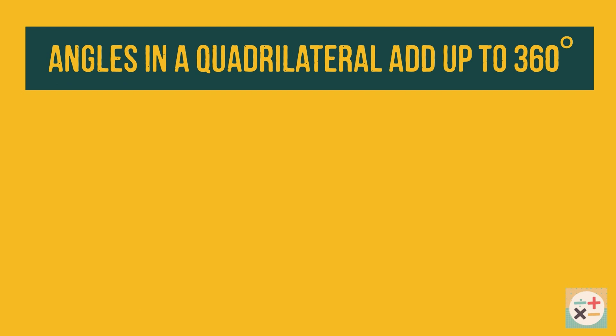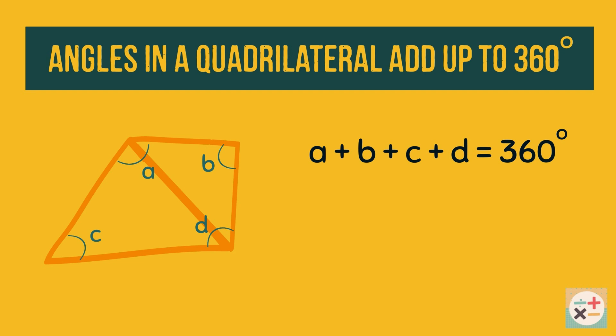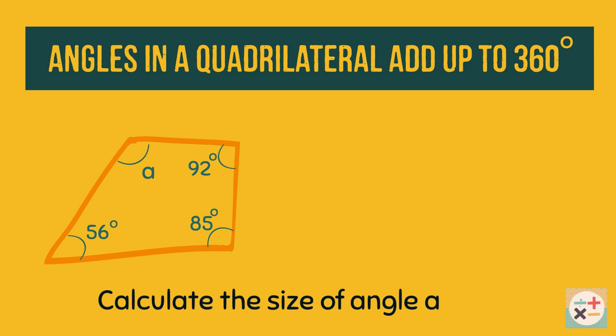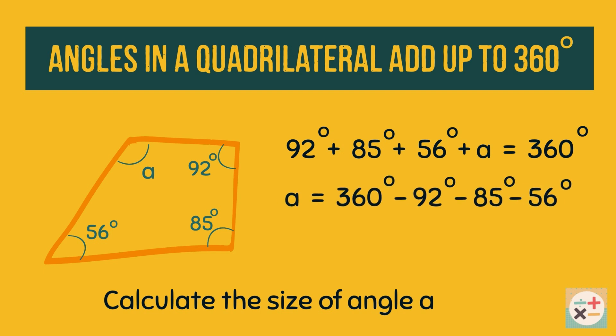Another rule is that angles in a quadrilateral — a shape with four sides — will always add up to 360 degrees. We can see this is true because we can divide the shape into two triangles, and each triangle has angles totaling 180 degrees. Let's solve this question by using this rule; we can rearrange the equation to find the angle.